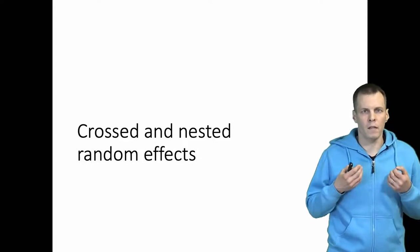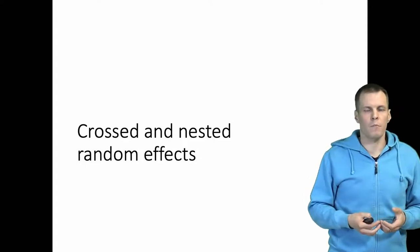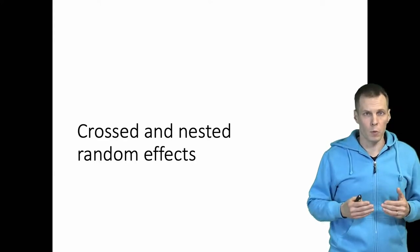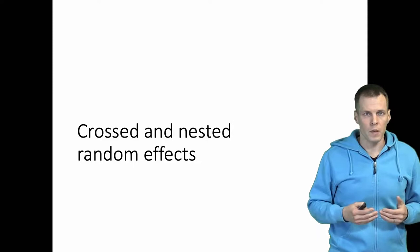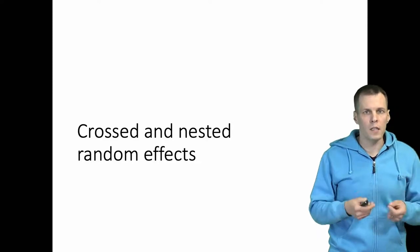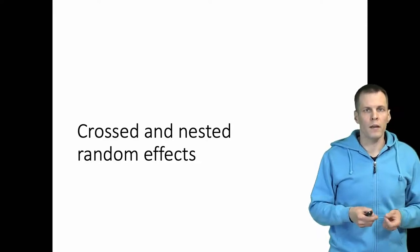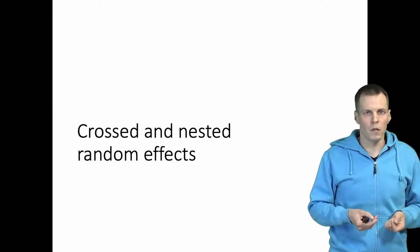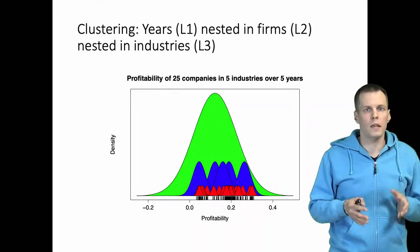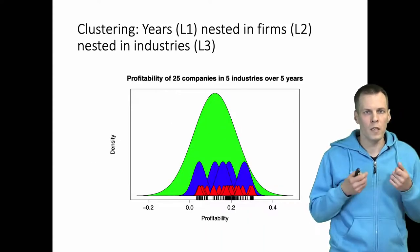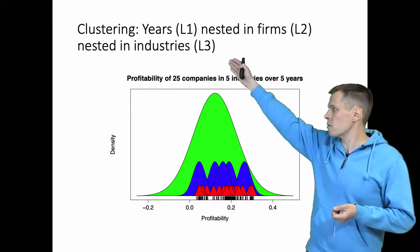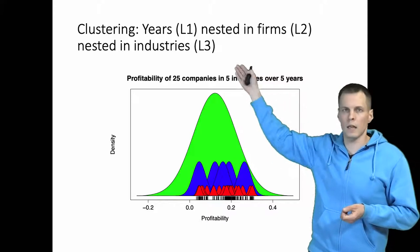Multi-level data are data that have different levels. For example, we have industries, we have companies in industries, and then we have repeated observations of those companies. This is an example of a nested structure, but there is also another kind of data structure used in multi-level modeling which is the crossed structure. Let's take a look at first what is the nested structure. The idea of nested structure is that we have three levels — for example, we have years nested in firms nested in industries.